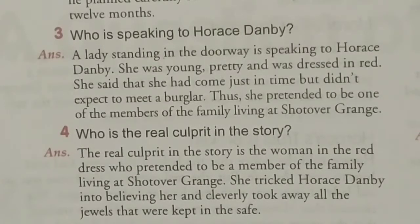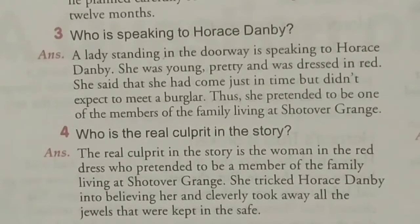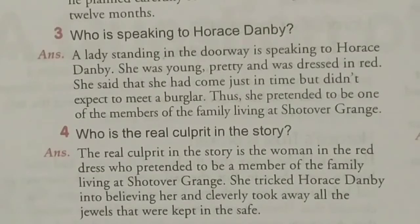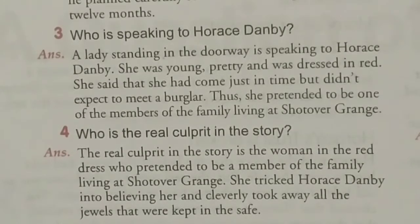She was young, pretty, and was dressed in red. She said she had come just in time but didn't expect to meet a burglar. She pretended to be one of the members of the family living at Shott Over Grange. Question number four: Who is the real culprit in the story? Answer: The real culprit is the woman in the red dress who pretended to be a member of the family living at Shott Over Grange.